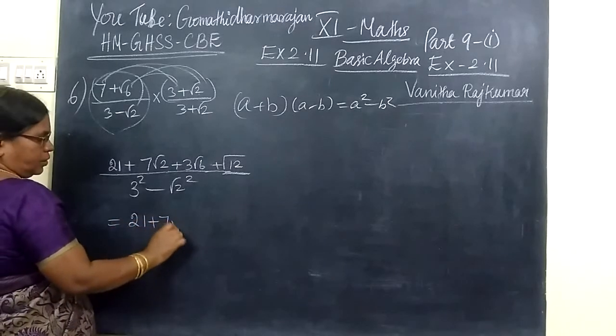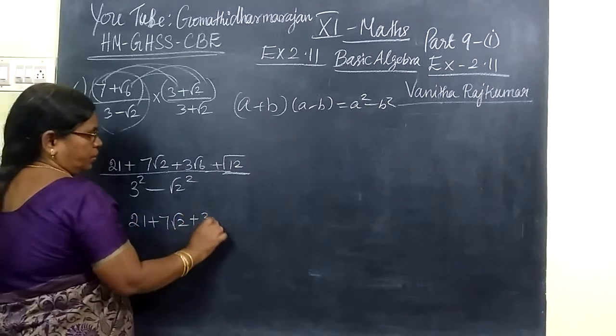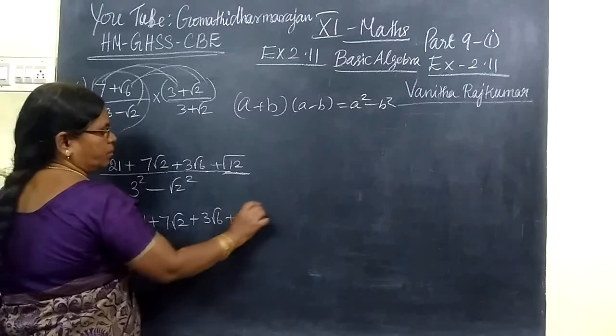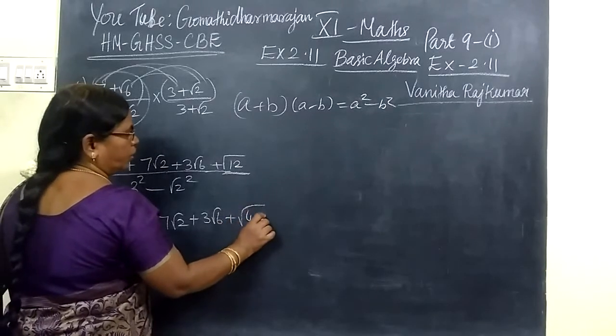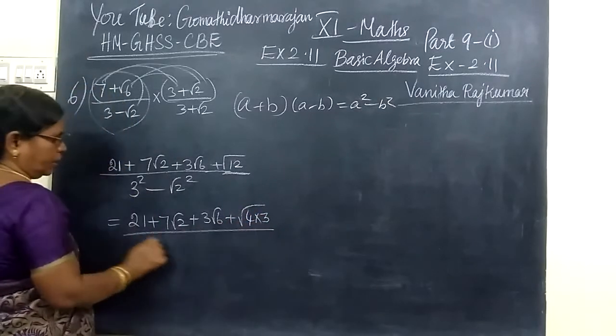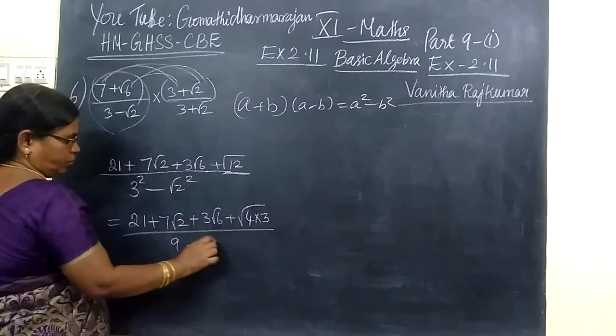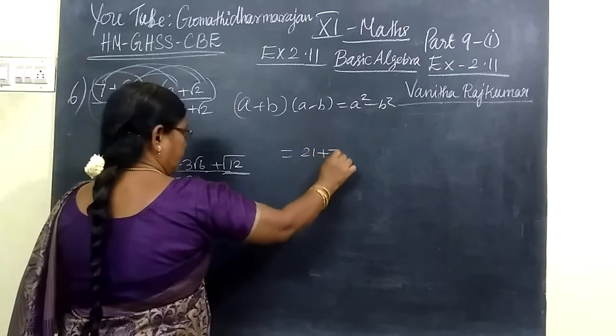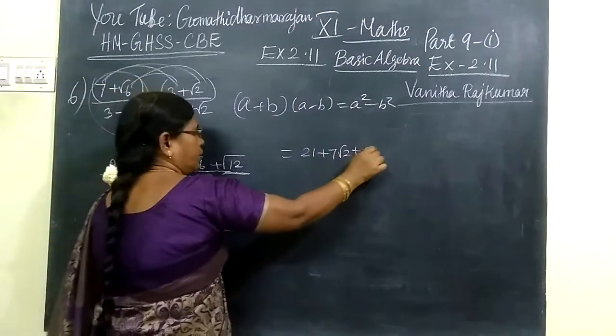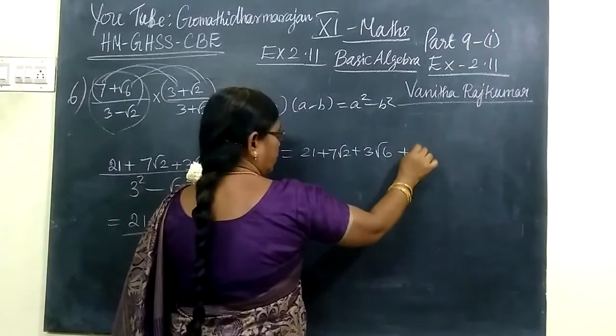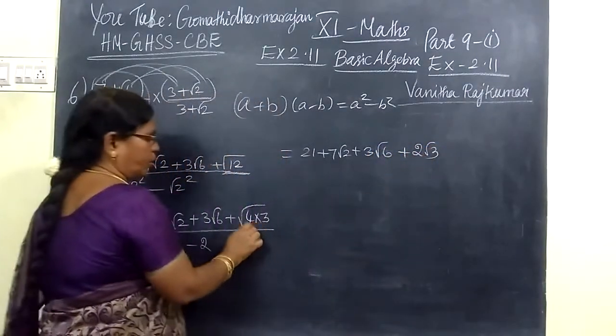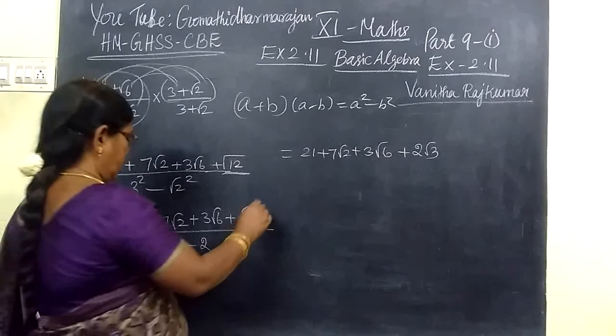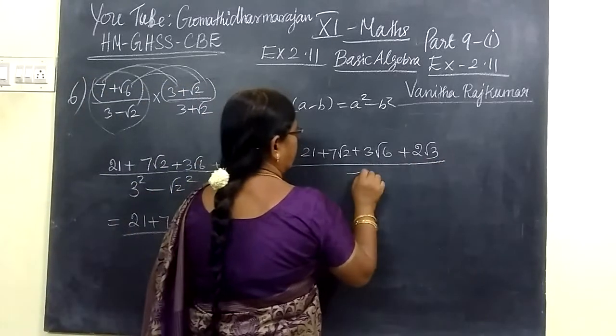Then 21 plus 7 root 2 plus 3 root 6 plus, this one comes into it as 4 into 3, by 9 minus 2. So this one is written as 21 plus 7 root 2 plus 3 root 6, then 2 root 3. This one is square root of 4, 2 root 3 already.